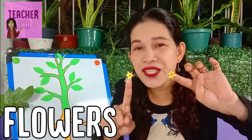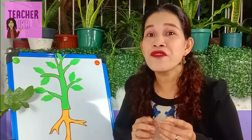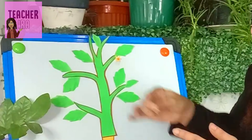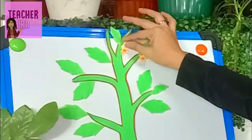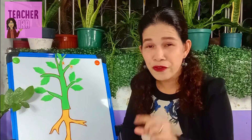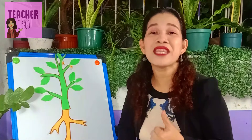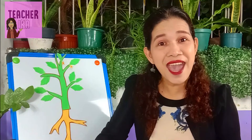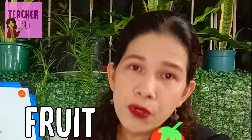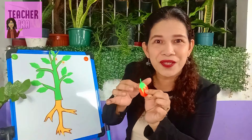Now these are flowers. Flowers are the most beautiful parts of the plant. Let me put the flowers here. In some plants, the flowers are where the fruits begin — right after the flowers, the fruits will come out. So you have a hint about the next part — this is a fruit. This is a tomato, so let us put it here.